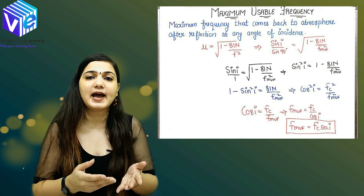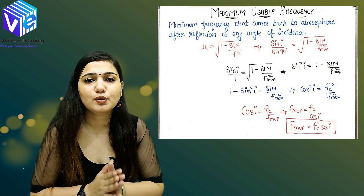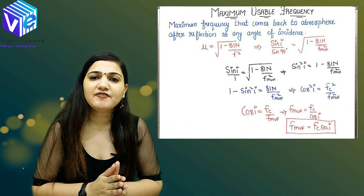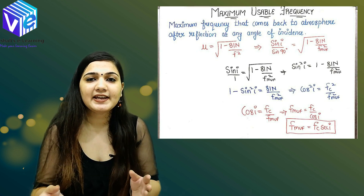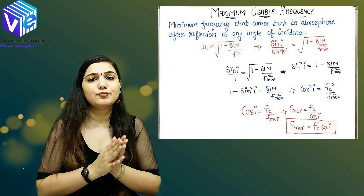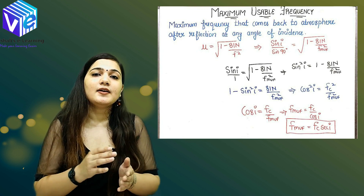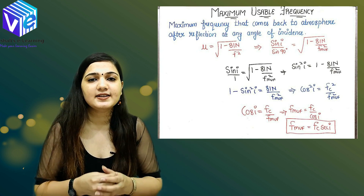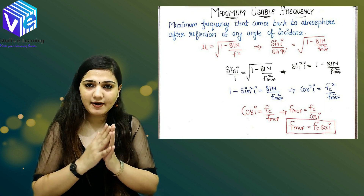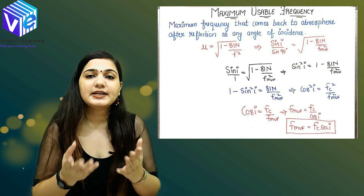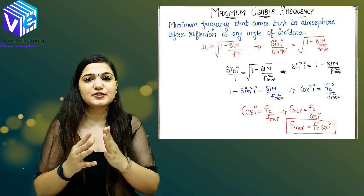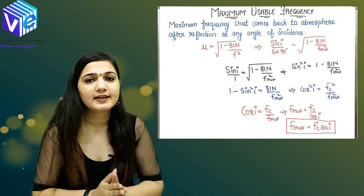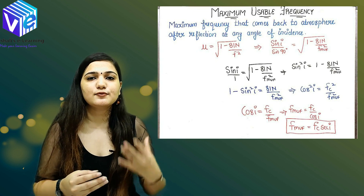So mu is represented by sin(I). Therefore, sin(I) equals the square root of (1 minus 81N upon F squared). Here F is FMUF, and since we know 81N equals Fc squared, we can replace 81N with Fc squared. So sin(I) equals the square root of (1 minus Fc squared upon FMUF squared). Taking the square of both sides: sin squared(I) equals 1 minus Fc squared upon FMUF squared.